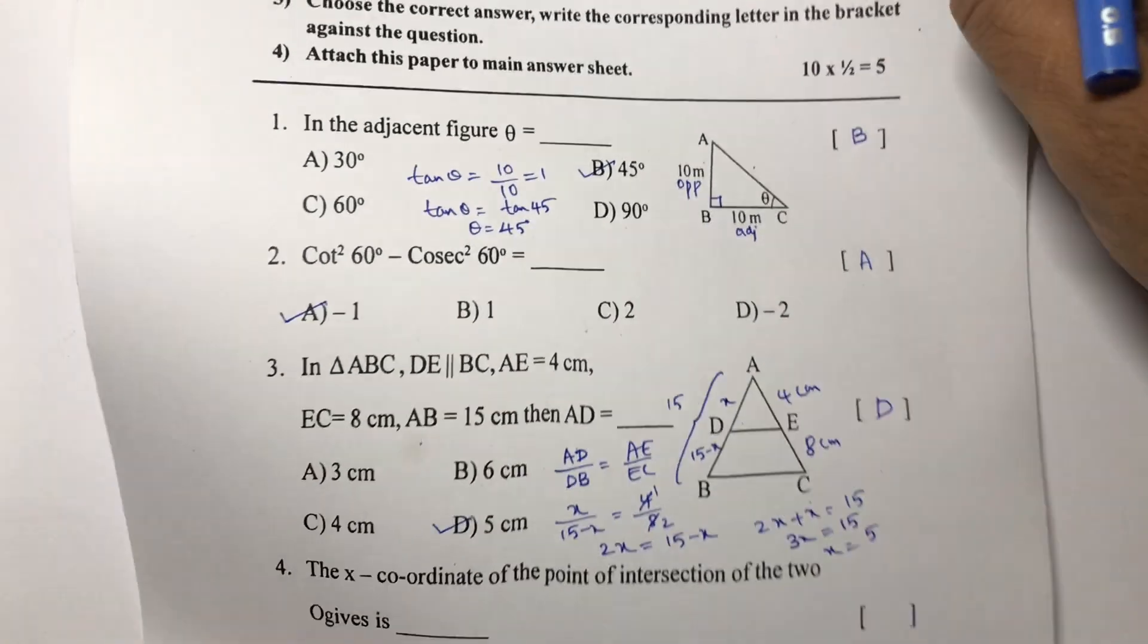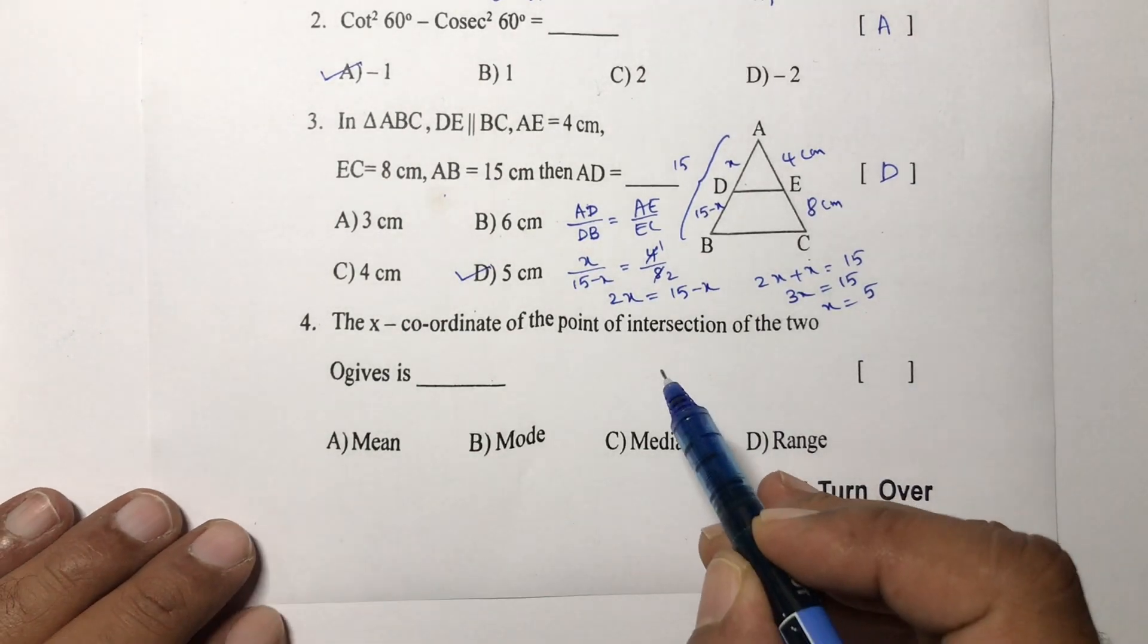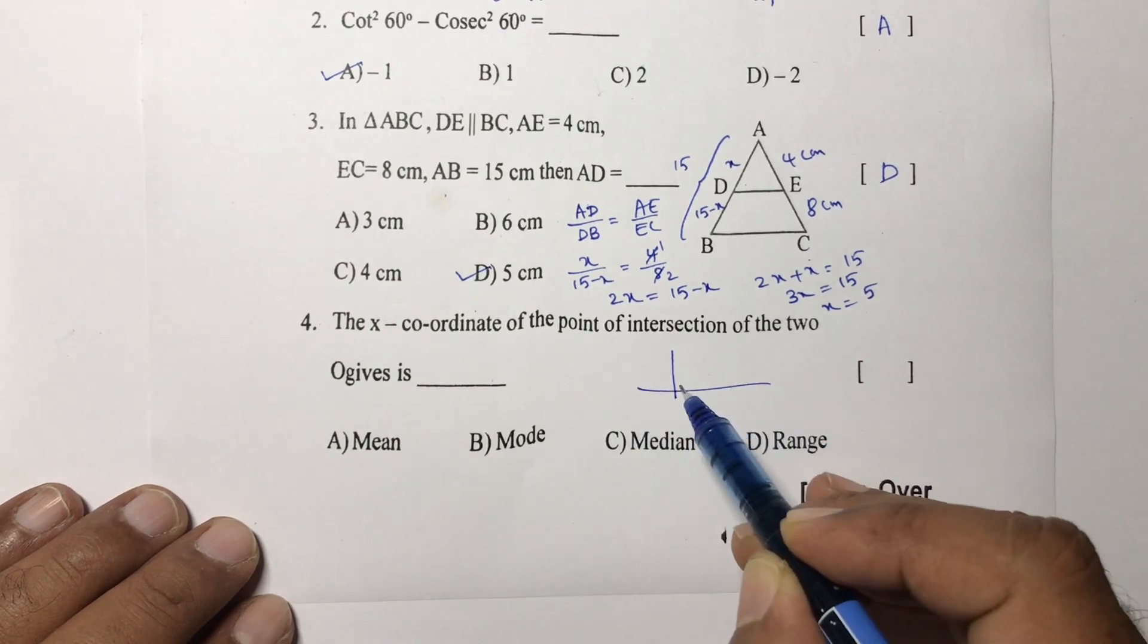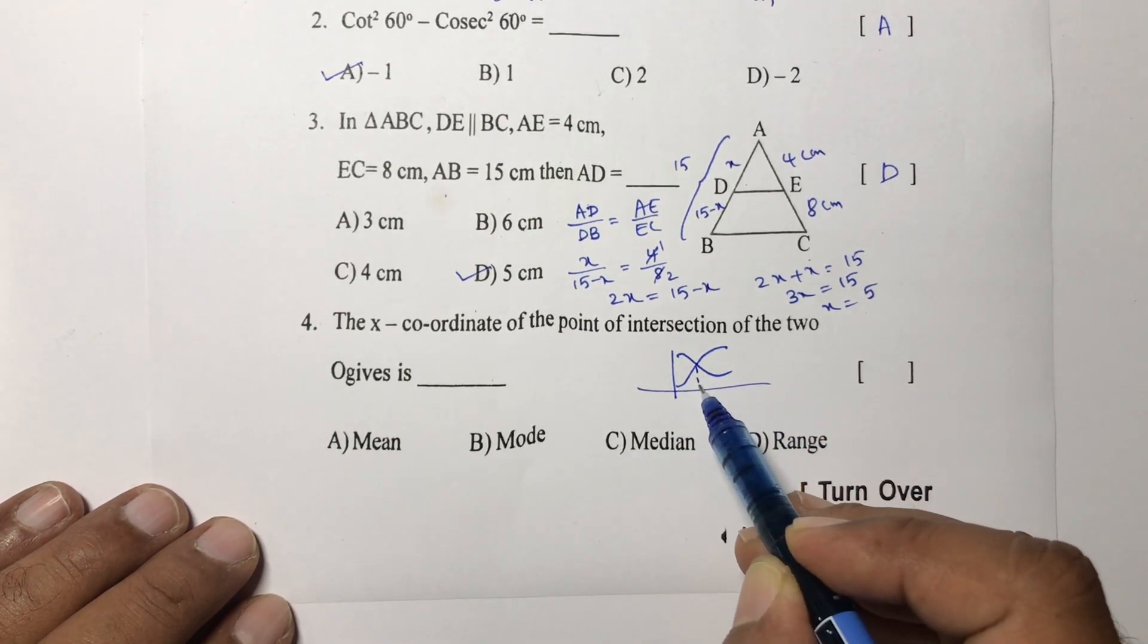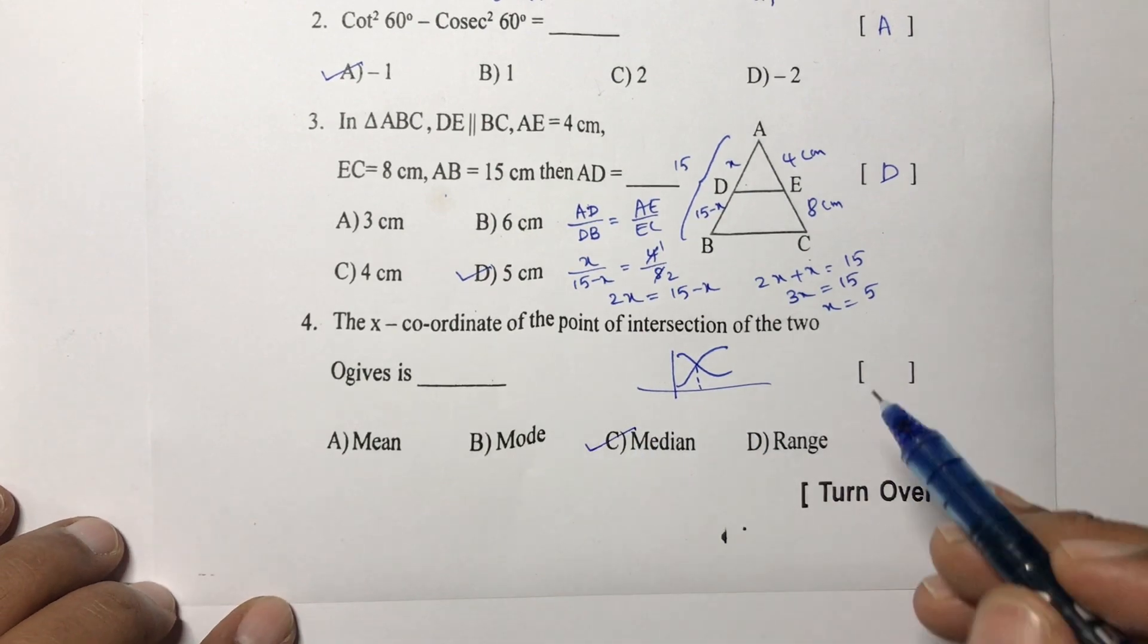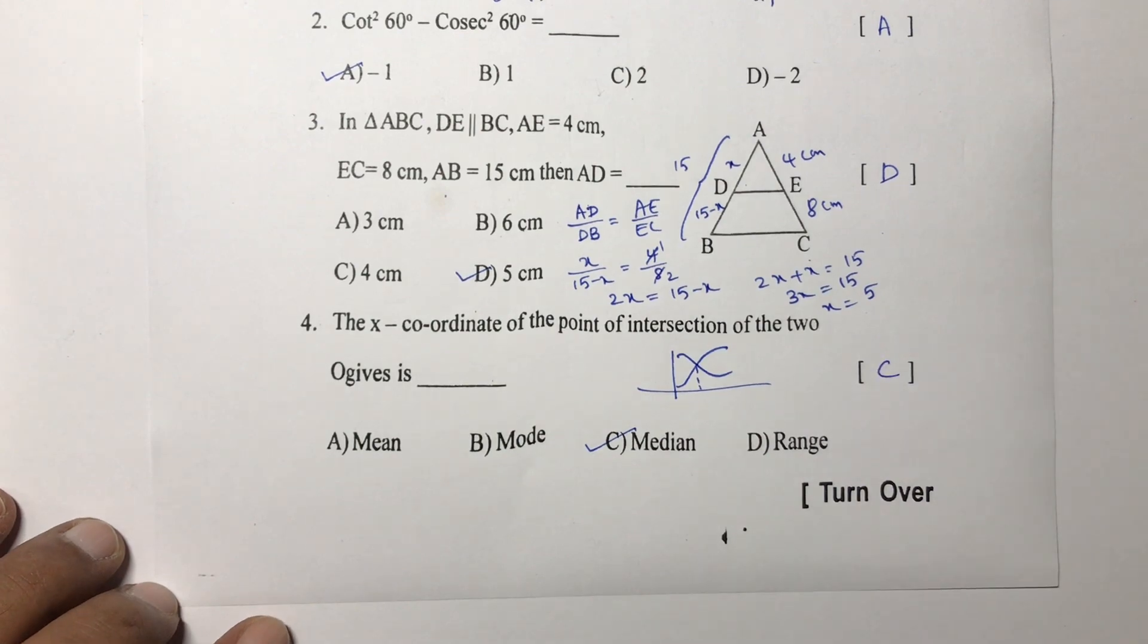In the graph, the x coordinate of the point of intersection of both the ogives—this is less than ogive and more than ogive—the x coordinate will give you the median. With the help of ogives, we will find the median. The correct option is C.